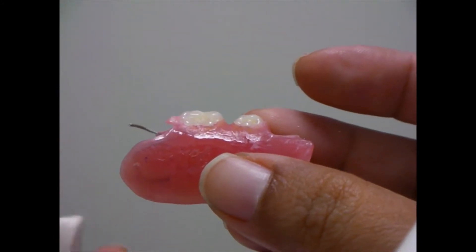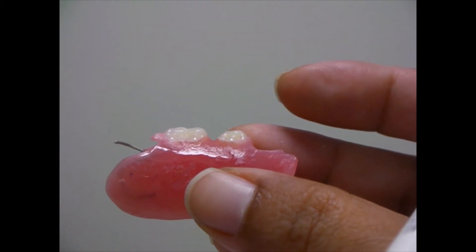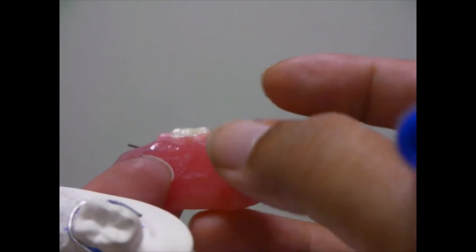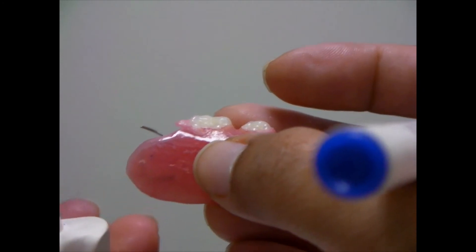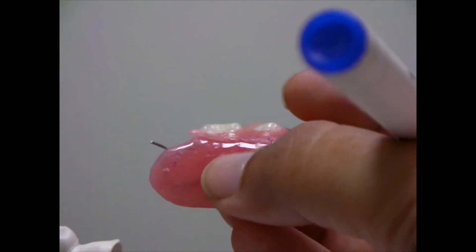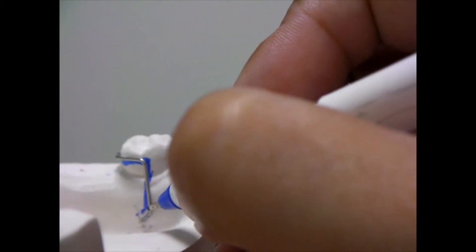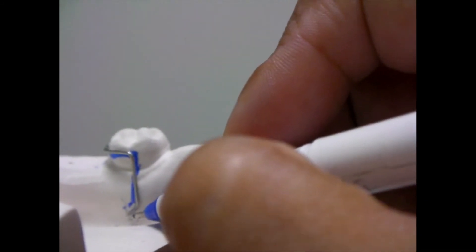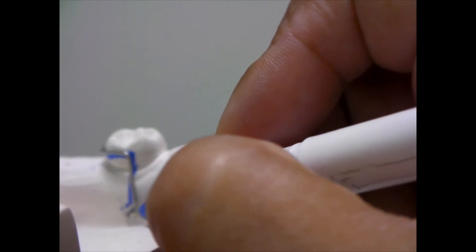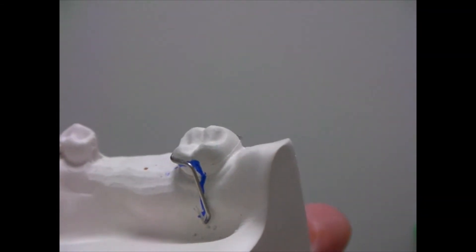So now you cannot see this part because it has been incorporated inside the acrylic but what it does is actually it has connected the clasp to the acrylic or the lingual plate. And now from this minor connector downwards you see there is a small projection over here and this projection is known as the retentive tag. So these are the parts of the circumferential clasp.